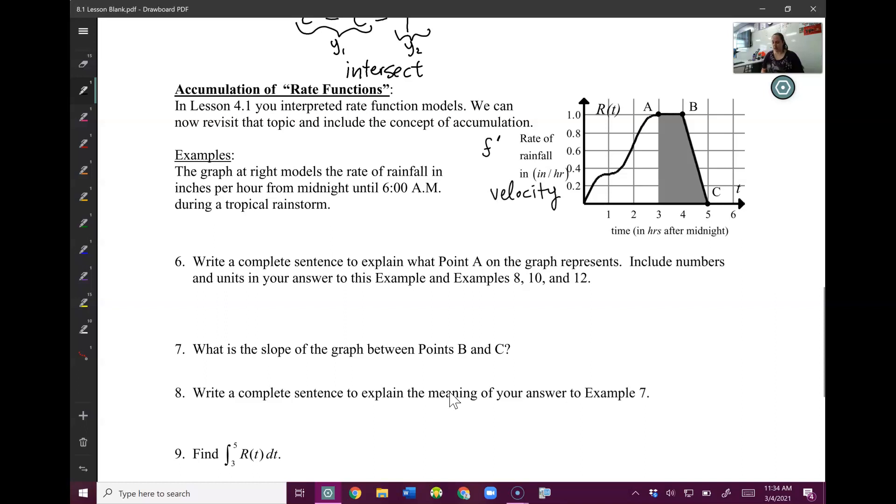Write a complete sentence to explain what point A on the graph represents. Include numbers and units in your answer. So let's actually put what point A is. So A is going to be 3, 1. Now this x value stands for time in hours. So this y value is the rate of rainfall. So if I want to say what this point means, I could say at this time, the rate of rainfall is this much. So at 3 a.m., 3 hours after midnight, the rate of rainfall is 1 inch per hour. So that's what that y value means.